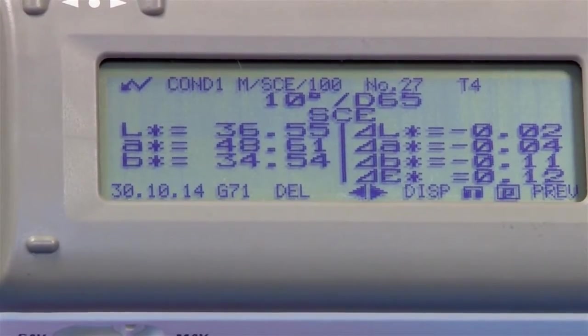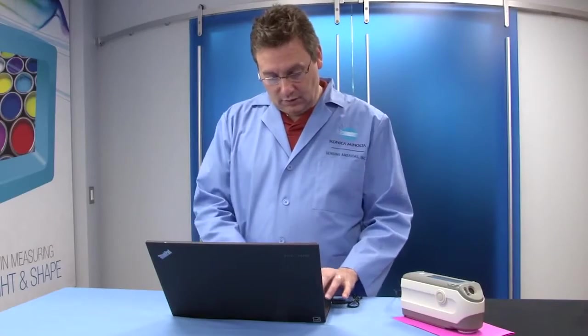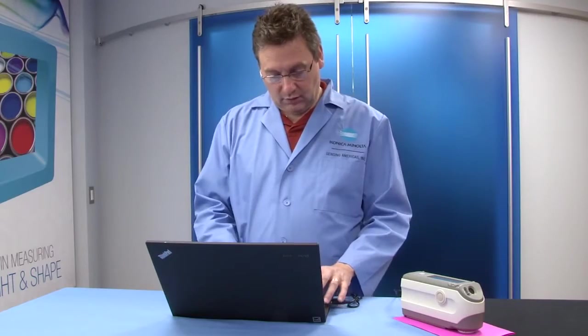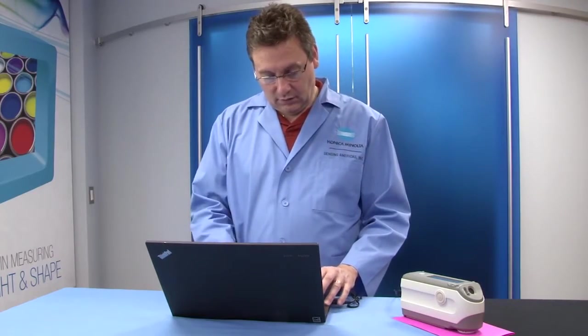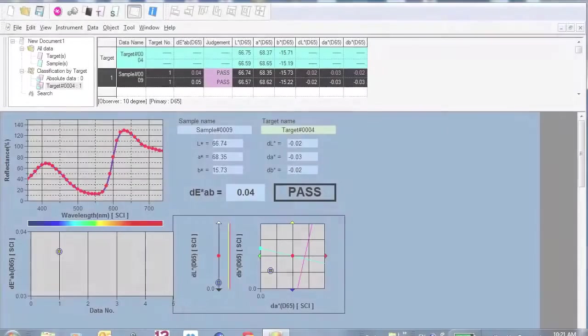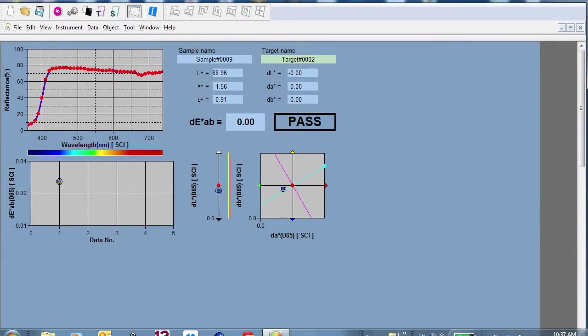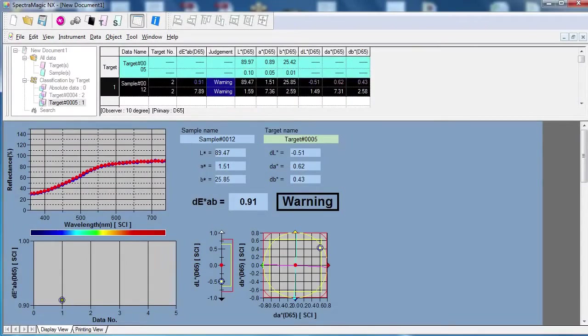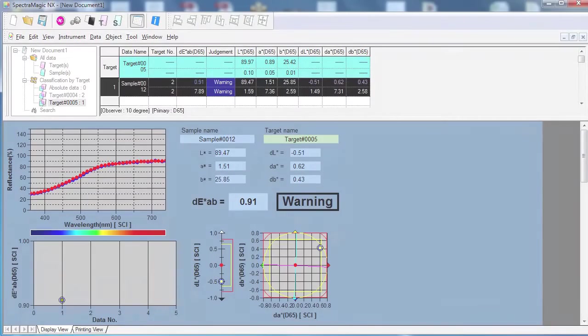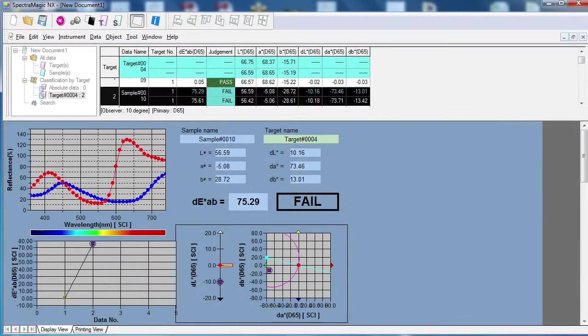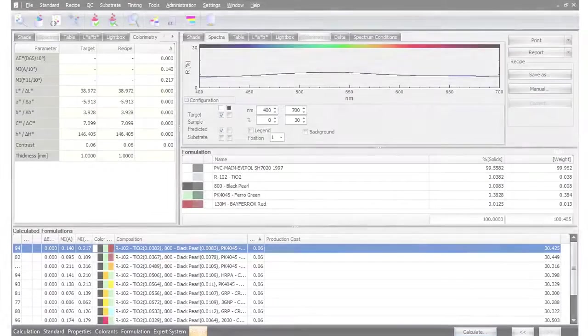A complete quality control and color management system is possible with the instrument's internal software along with SpectraMagic NX, an optional color quality control software. SpectraMagic NX allows you to configure graphic and numerical layout according to your needs, from pass-fail assessments to more sophisticated analysis with spectral color and trend graphs.